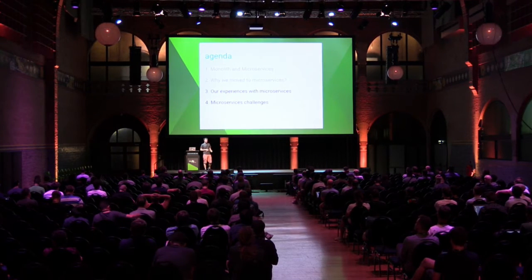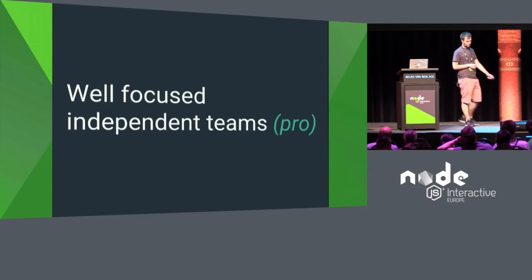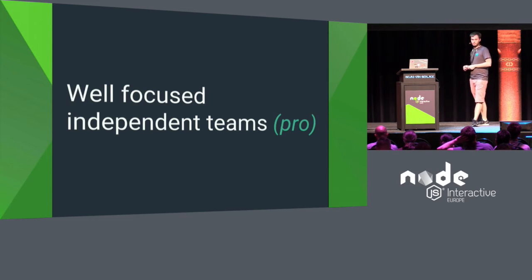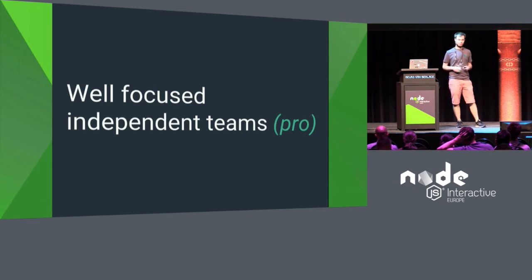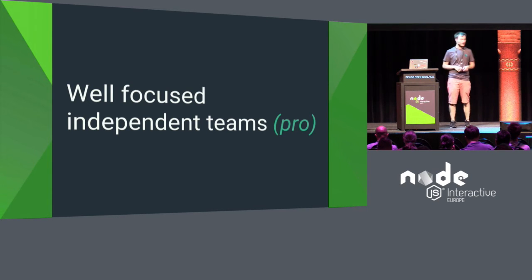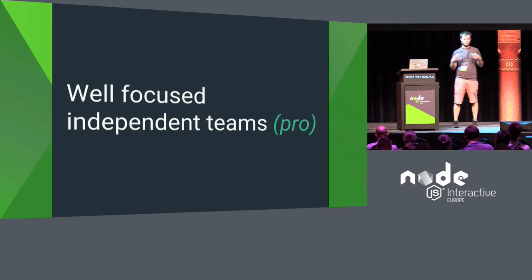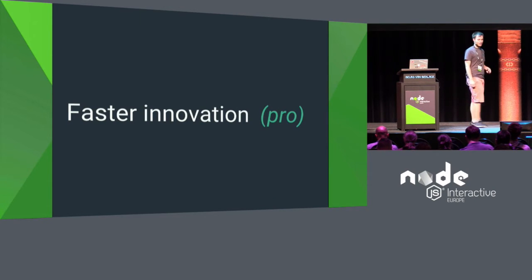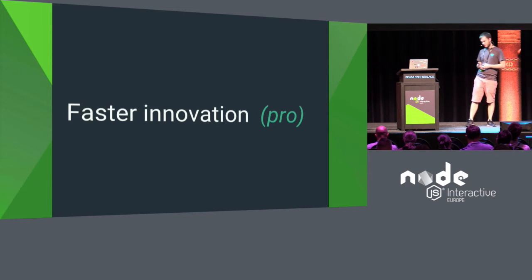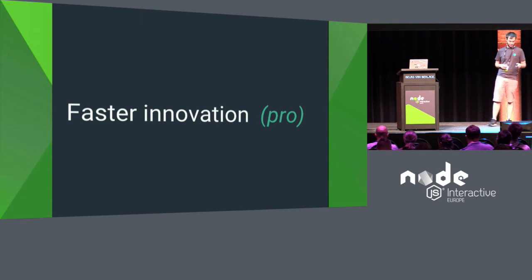Let's start with the bright side. We got well-focused, independent teams. It wasn't easy at the beginning — we had to change a lot in how we manage people and how teams communicate — but at the end of the day it works really well. Some companies choose microservices not for technical reasons but because they have distributed teams around the world. Faster innovation is another benefit: with smaller services it's easier to design, implement, and ship, and also easier to replace or try out new technologies and databases.